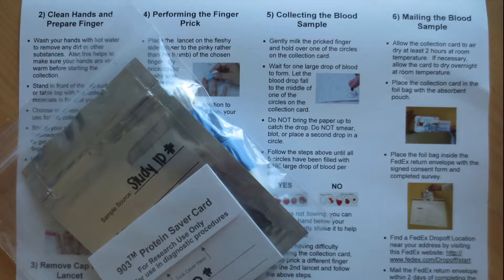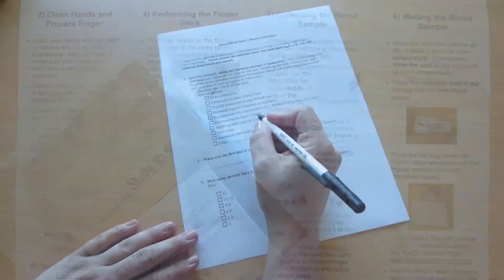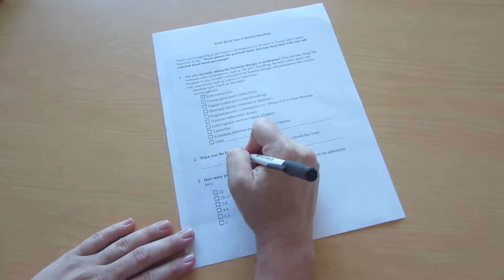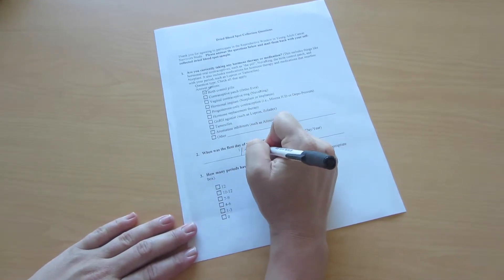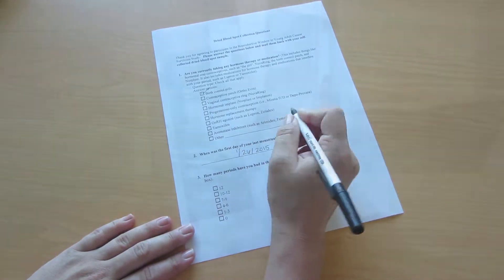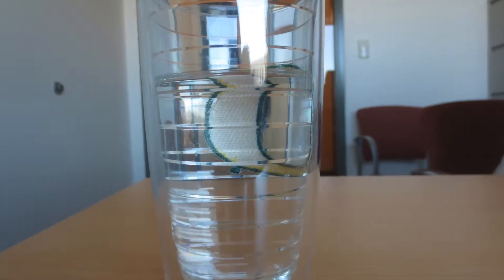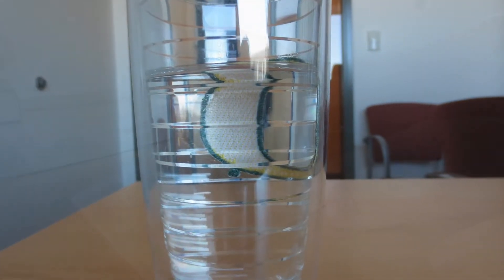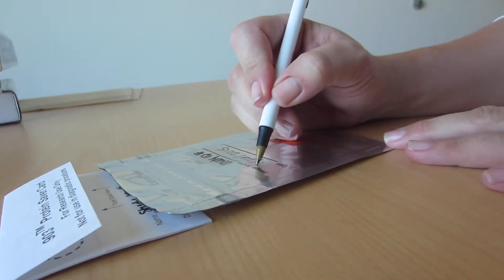There are a few key steps that you will need to complete before you collect your sample. First, answer the survey questions that were included in your packet. Then, drink a full glass of water. Write the date of collection on the collection card and foil bag.